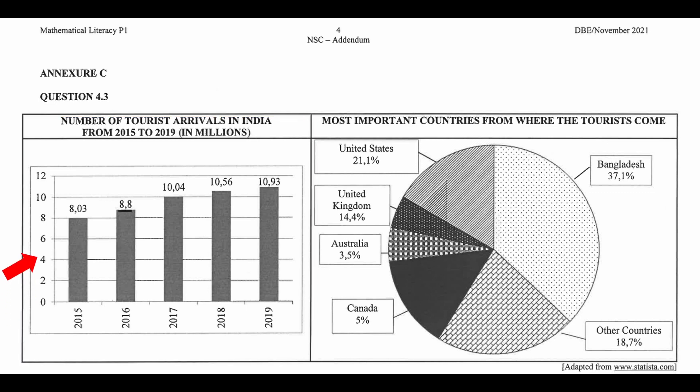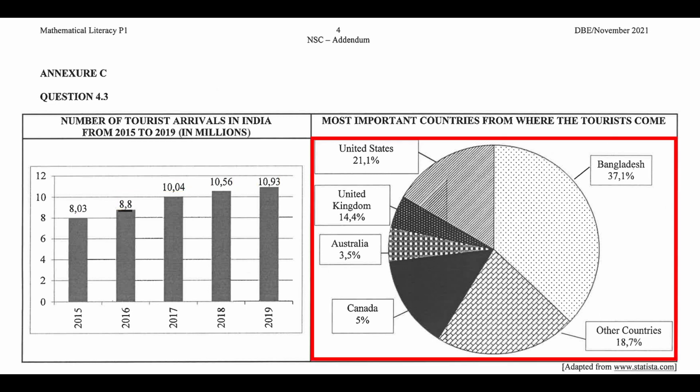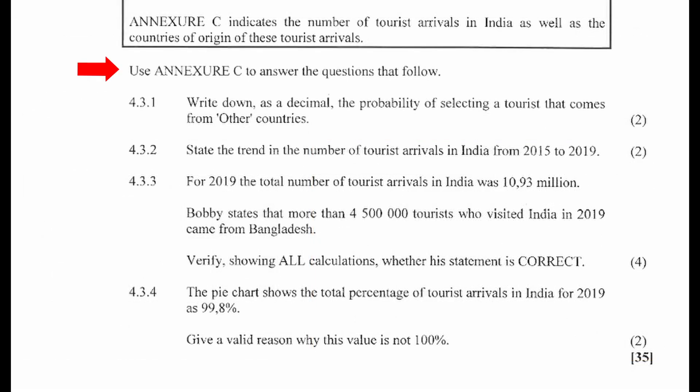The bar graph shows the number of tourist arrivals in India from 2015 to 2019 in millions. The number of tourists are represented on the y-axis and the years on the x-axis. The number of tourists each year in millions are given above the bar of each year. The pie chart shows the most important countries from where the tourists come from. We are instructed to use Annexure C to answer the questions that follow.